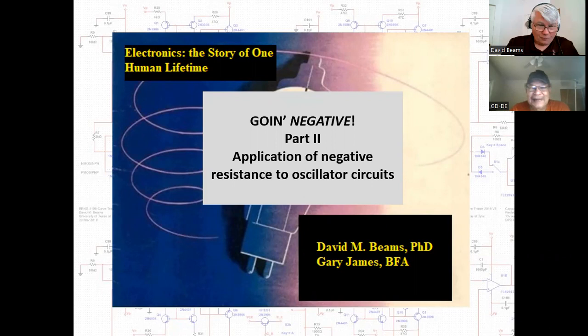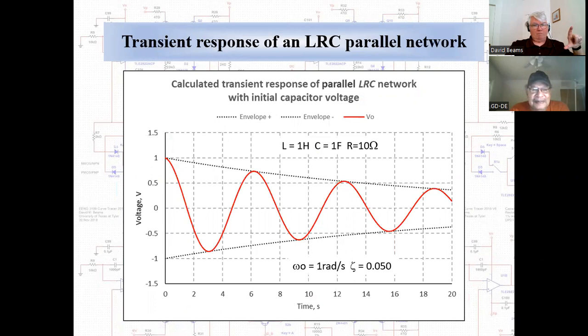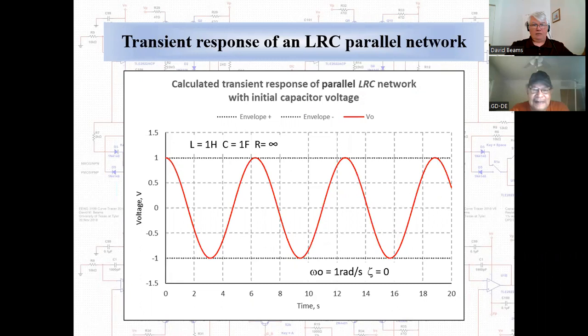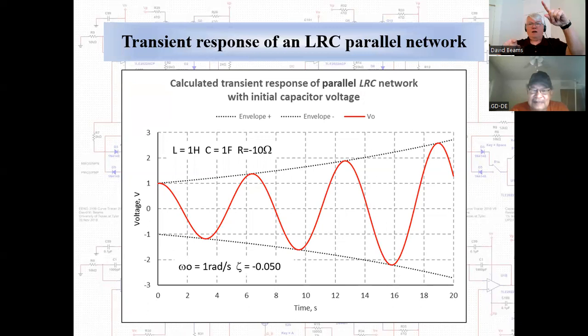Here we go — application of negative resistance to oscillator circuits. You remember last time I was showing you that if you take an LRC circuit — inductance, resistance, capacitance — and put some energy in it and let it go, one possible mode of the transient response is a decaying sinusoid. And if the resistance is zero, so it's a pure LC circuit, then you get a constant amplitude sinusoid. But if you could somehow put a negative resistor on that network, you'd get an exponentially diverging sinusoid.